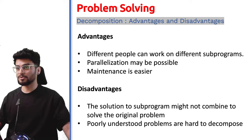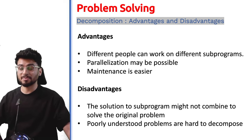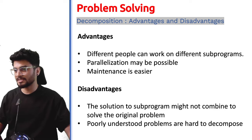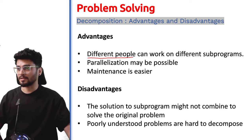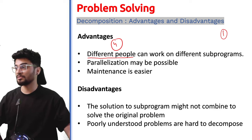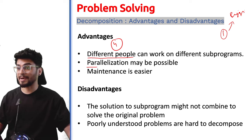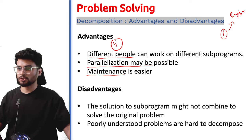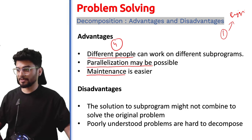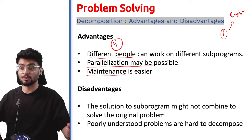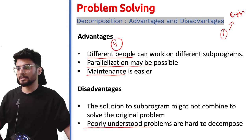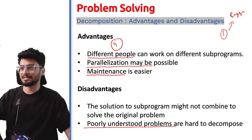The advantages of decomposition are that when you divide into smaller tasks, different people can work on them — if you have subtasks 1, 2, 3, 4, you can give them to 4 different people instead of 1 person working on the bigger problem. This means parallelization is possible — multiple people working at the same time. Maintenance is also easier. Disadvantages include that if smaller problems combine poorly, the bigger problem may not be solved correctly. Also, poorly understood problems are hard to decompose.